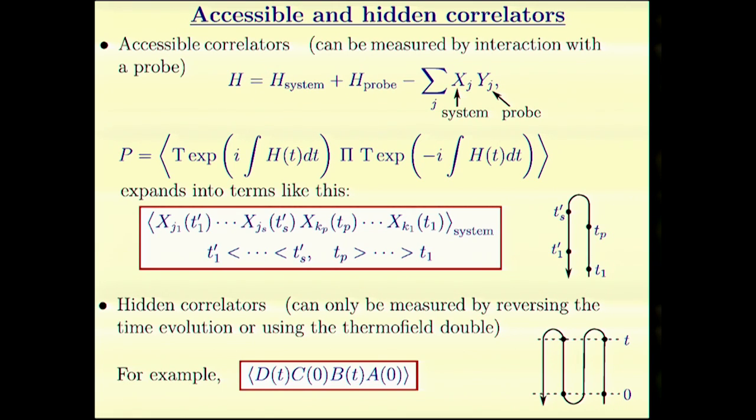We get this expression for the probability, and it expands into properly ordered correlators, where the time goes up and then down. I claim without much proof that black holes are hard to distinguish from junk just by these correlators.